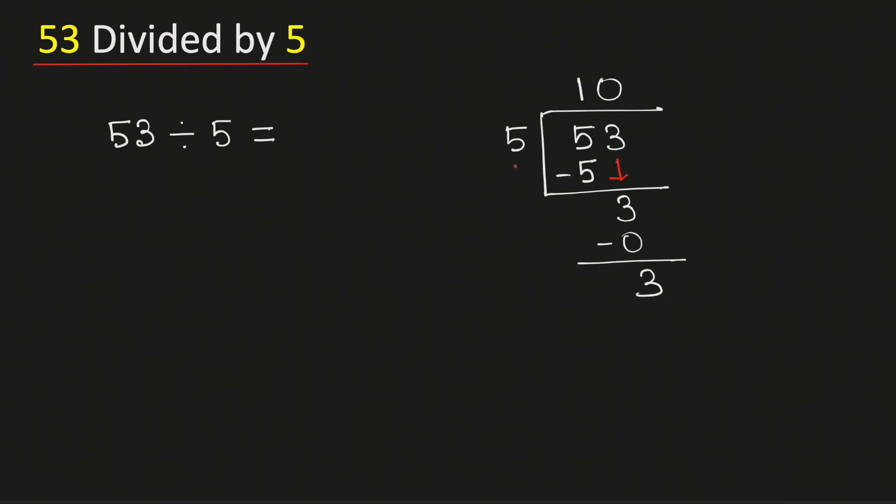Now see that 3 is less than 5 and we don't have any number to bring down. So we will put a decimal here so that we can bring one 0.